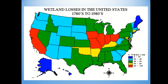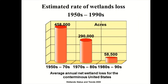Wisconsin didn't fare as badly — we don't have as many people here, so we didn't lose as much. But we still lost about half of our wetlands. Overall, wetland losses have really declined, but we're still losing them even now, even though we have laws against that.